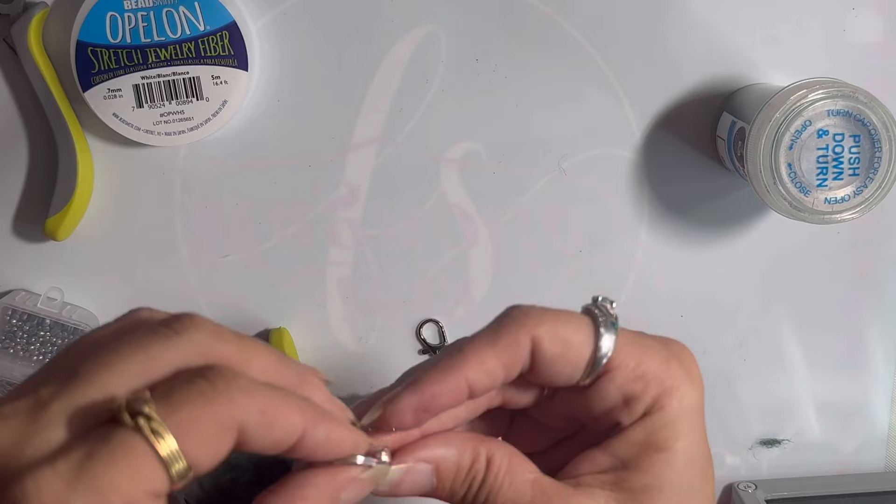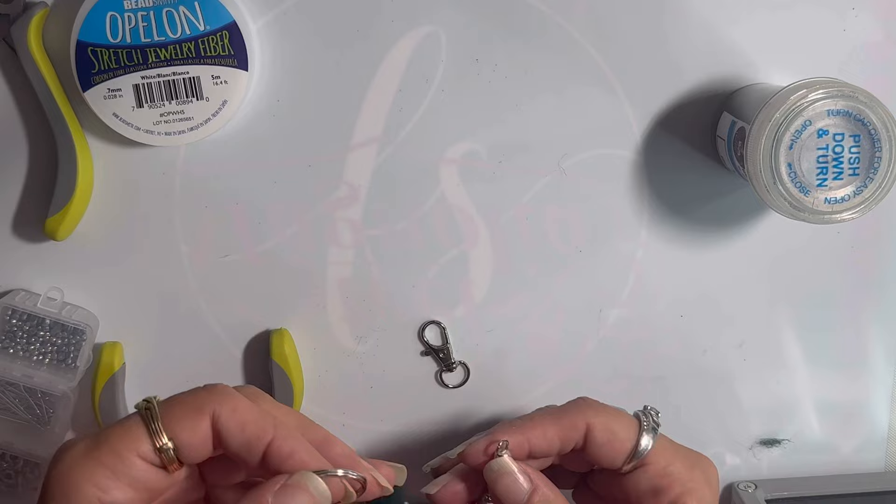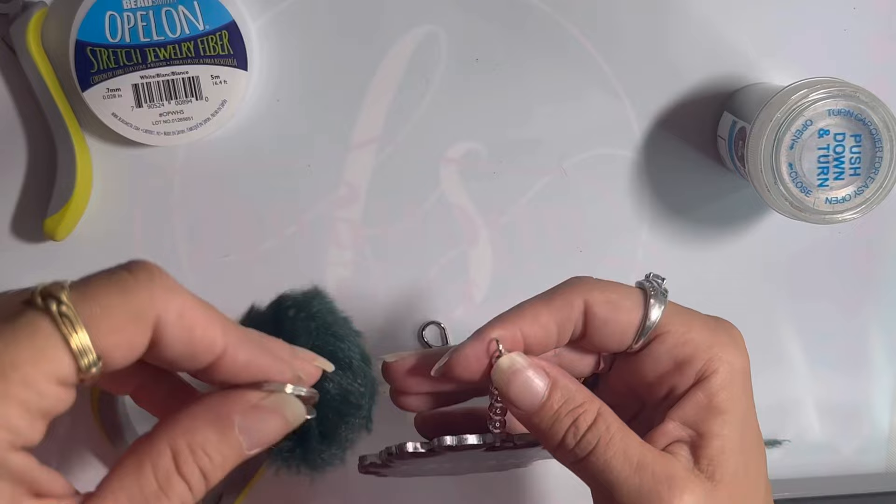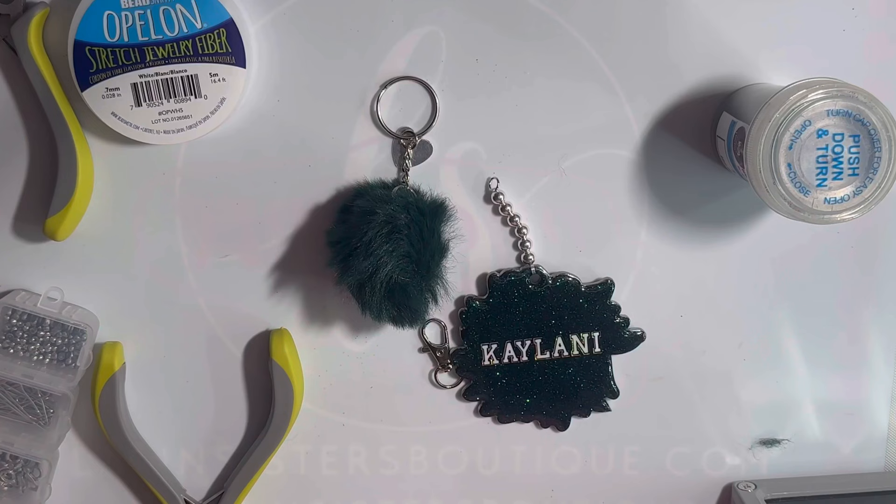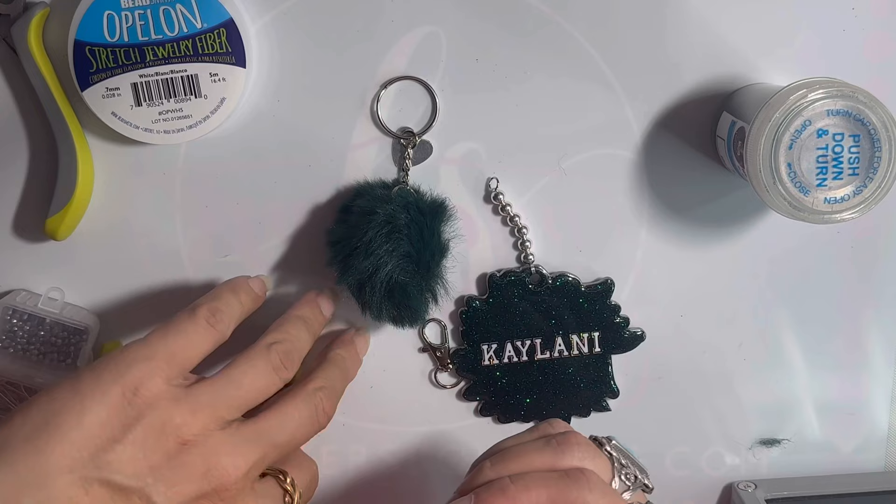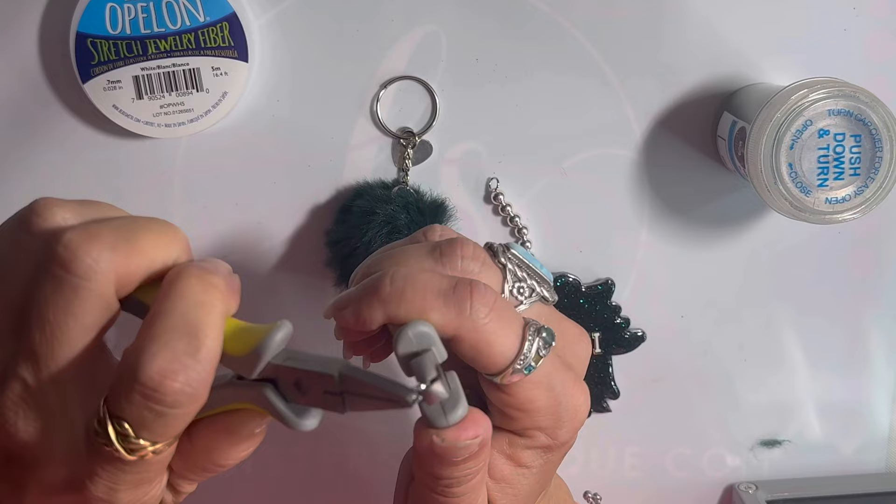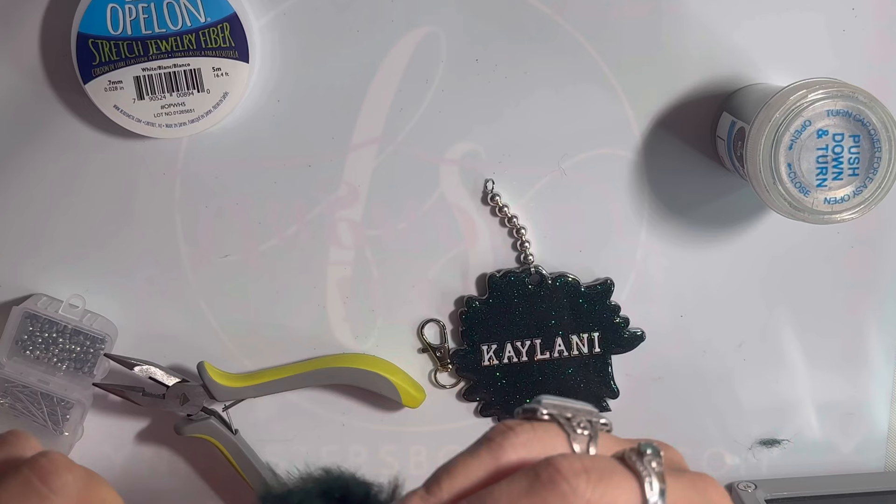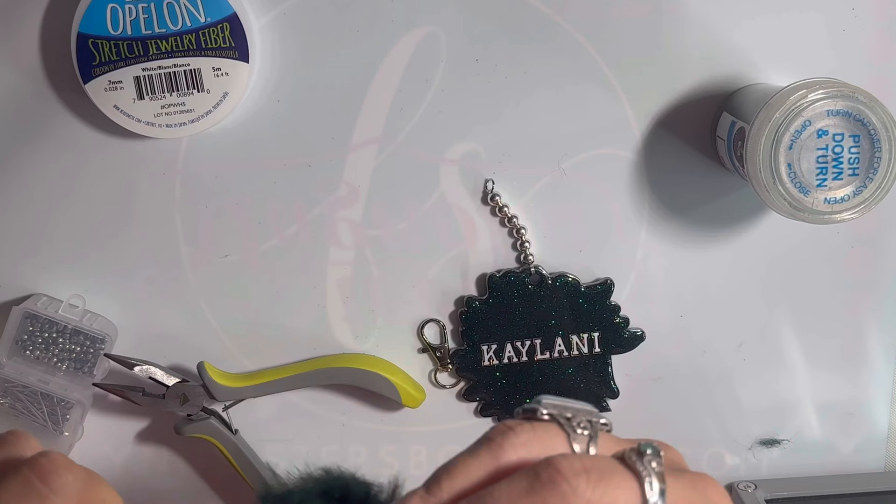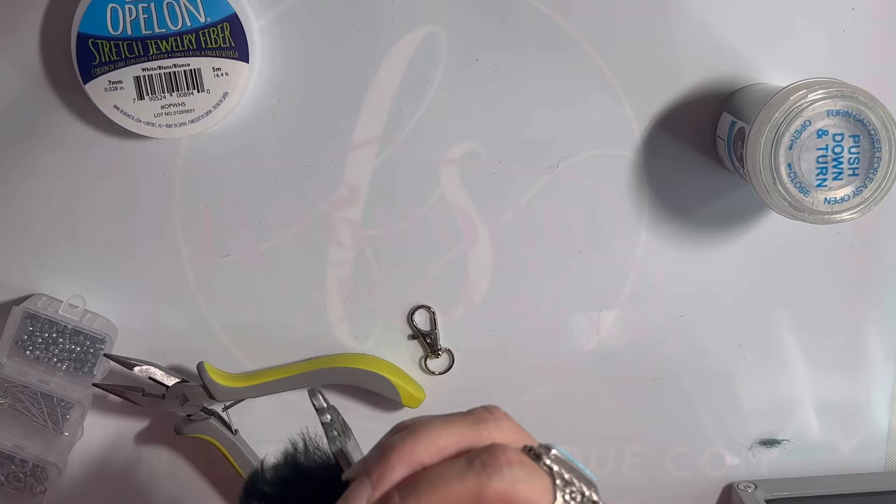To attach these, I'll get some split rings. With these little split rings, you take pliers on both sides of where they separate, you twist them sideways, and you put it through where you wanted to go on the one and then put it through where you want to go on the other so that they're both hanging. Then you take your pliers again with both sides and you just push them back together.